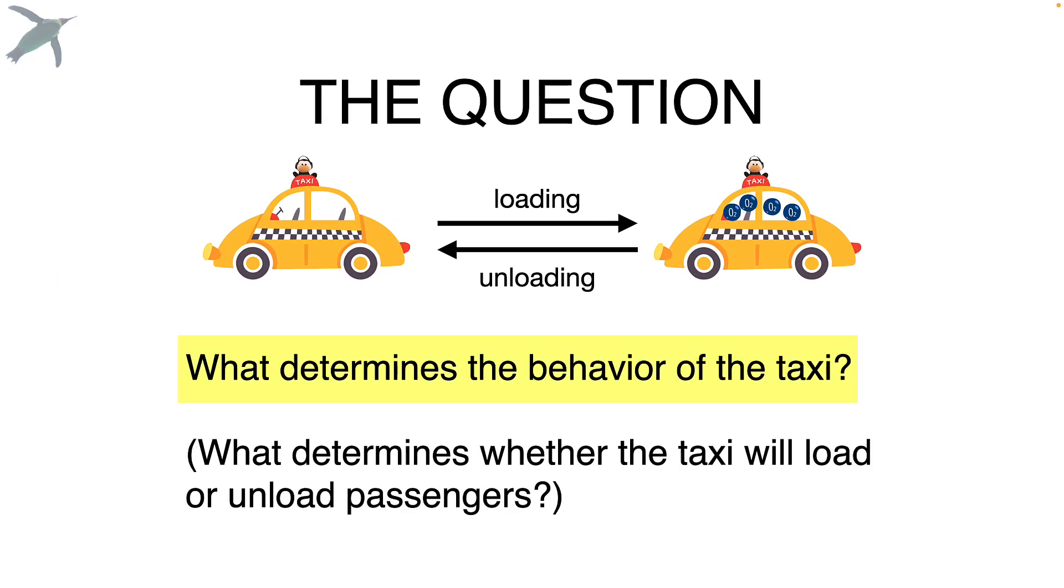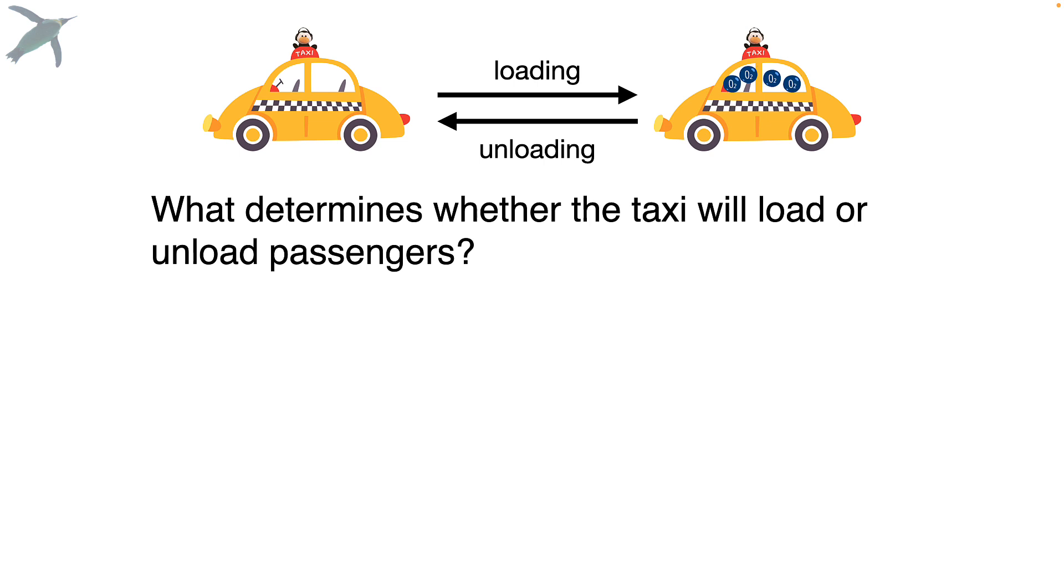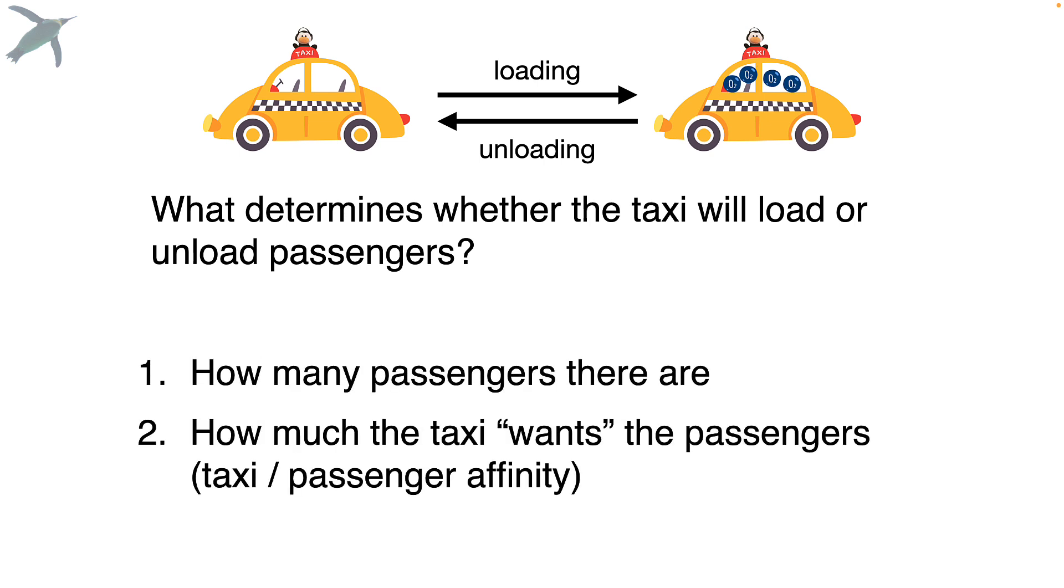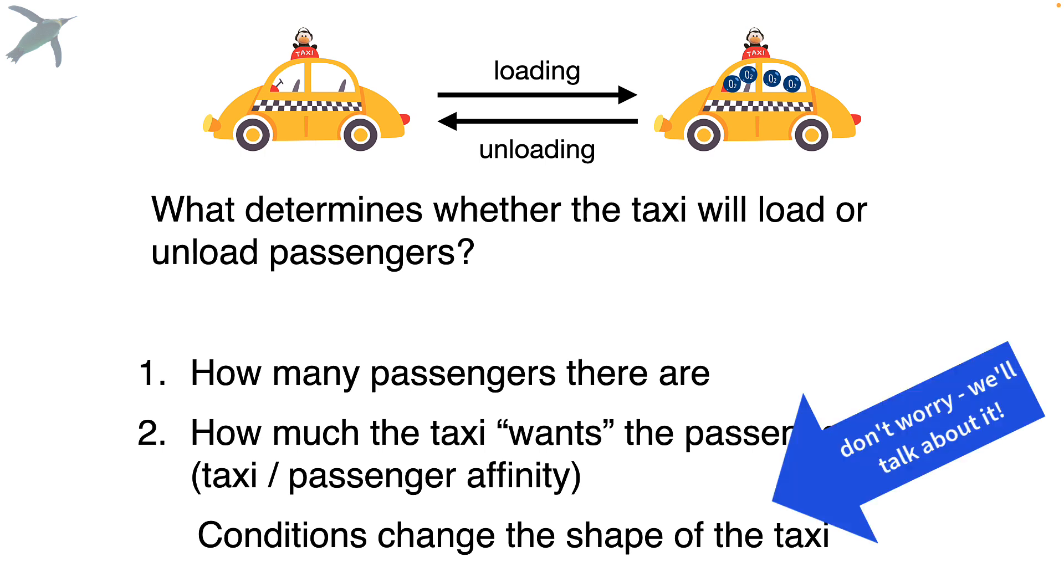Here is the question. What determines whether or not that taxi will load or unload passengers? Remember, it doesn't have a brain, right? It doesn't know what it's supposed to do. There are two factors. The first thing is how many passengers there are around. And the second is harder to understand. It's how much the taxi wants the passengers. That is an affinity. And so conditions will change the shape of the taxi. This is where the analogy kind of breaks down, but just go with me on this. We'll get there.